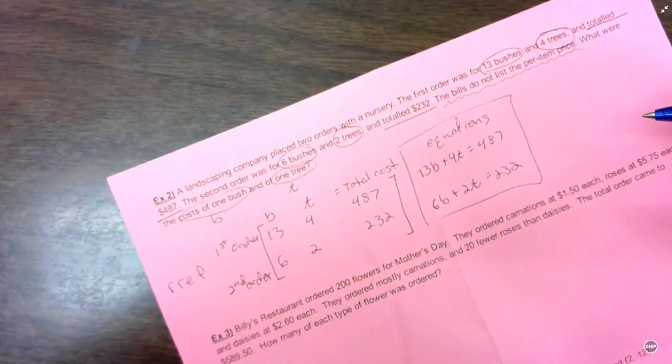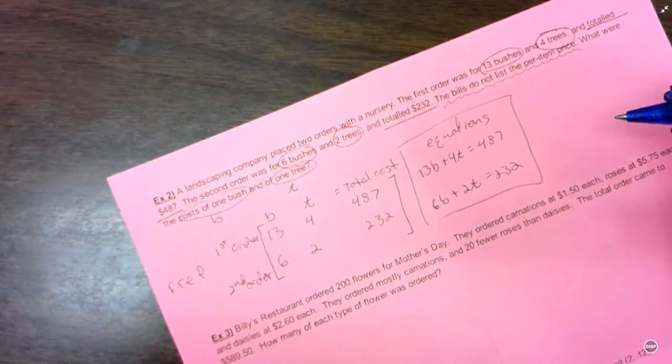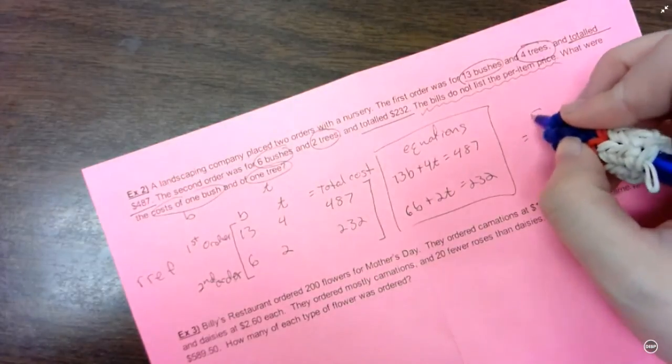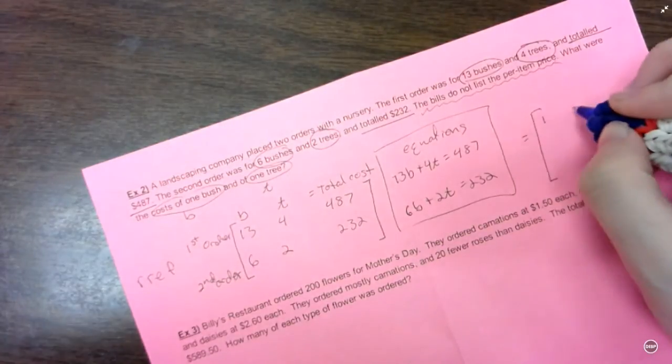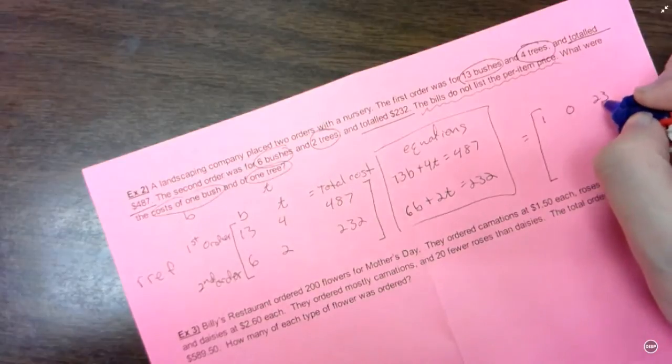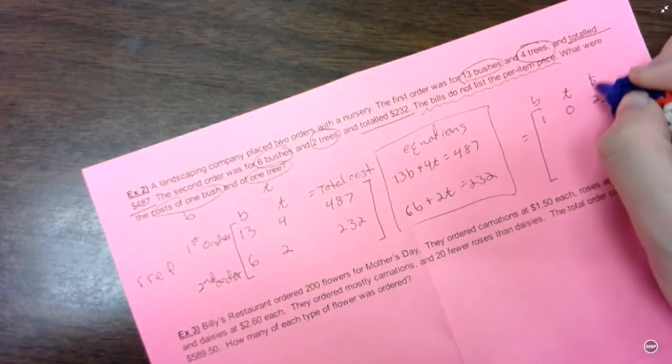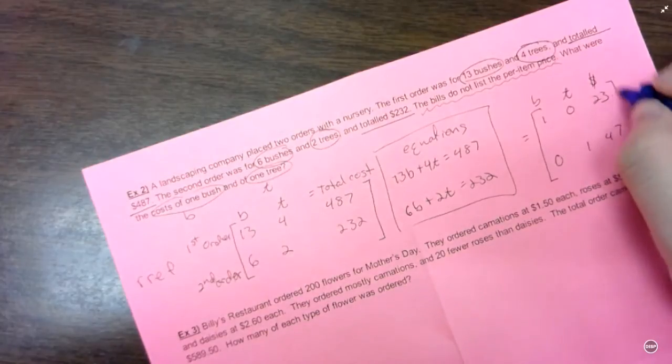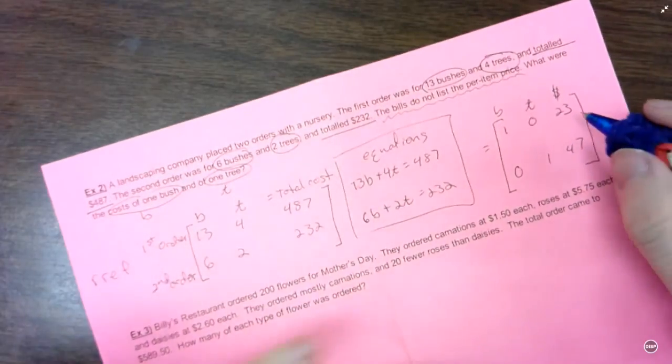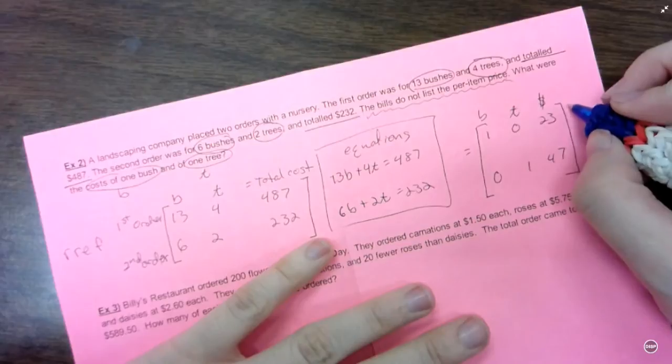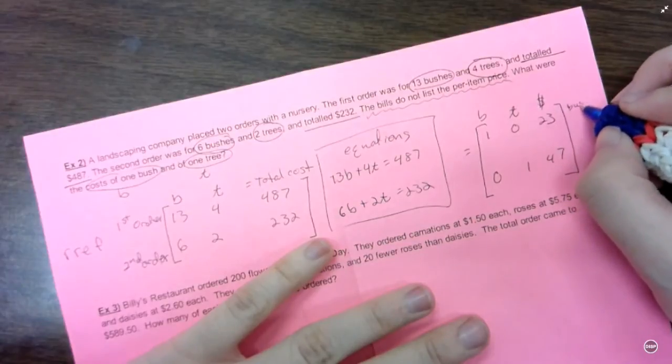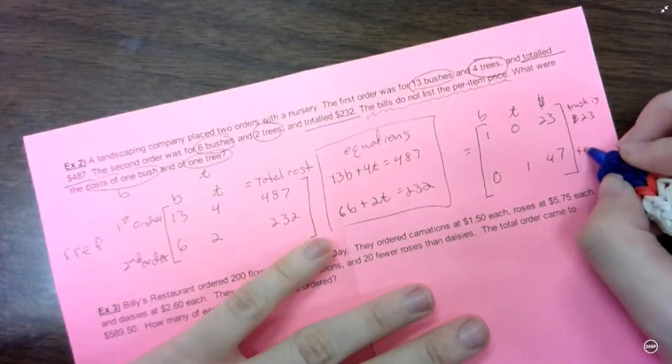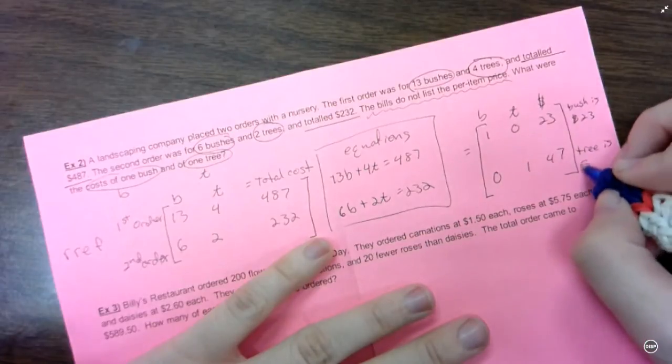Bam, there's your equations. And the solution to this one would give you this matrix. So bushes, trees, total. Which means each bush is $23 and each tree is $47.